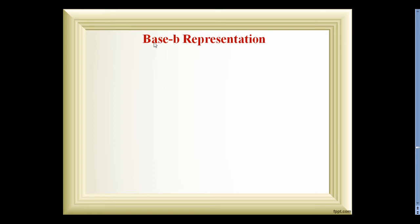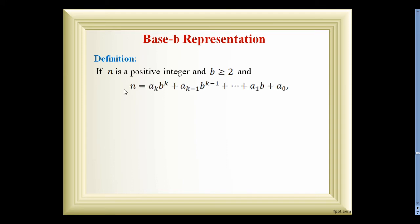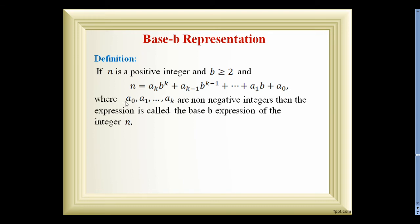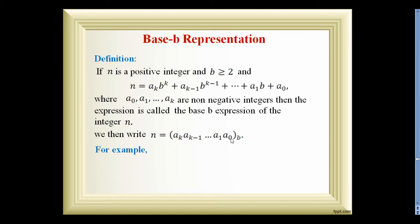Next topic: base B representation. If n is a positive integer and b ≥ 2, then n can be written as a_k·b^k + a_(k−1)·b^(k−1) + … + a_1·b + a_0, where all a_0, a_1, … , a_k are non-negative integers. This expression is called the base B expression of the integer n.